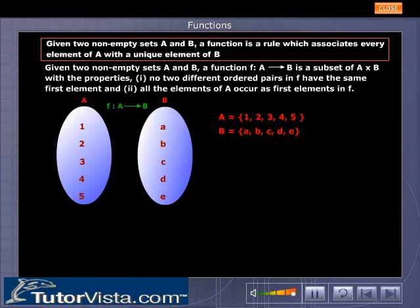Let's understand the functions with this example. A is equal to set {1, 2, 3, 4, 5}. B is equal to set {a, b, c, d, e}.